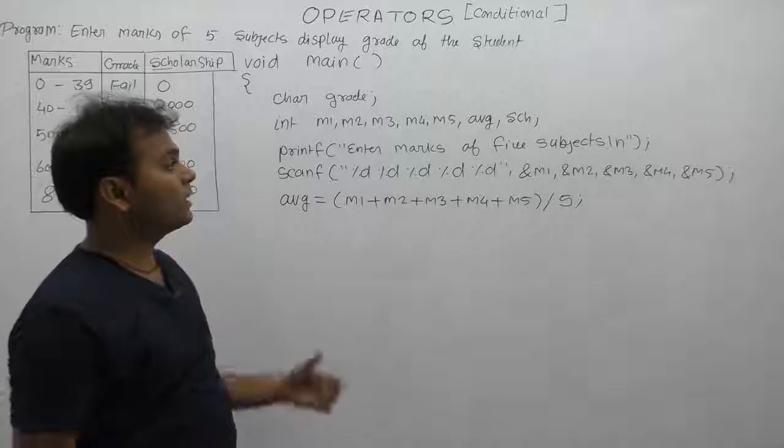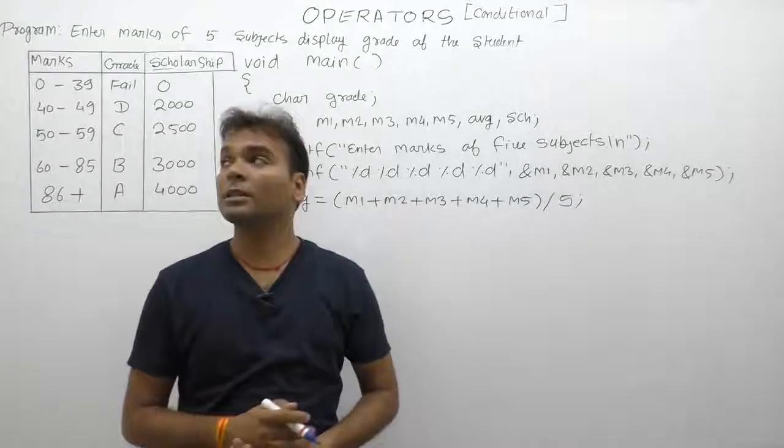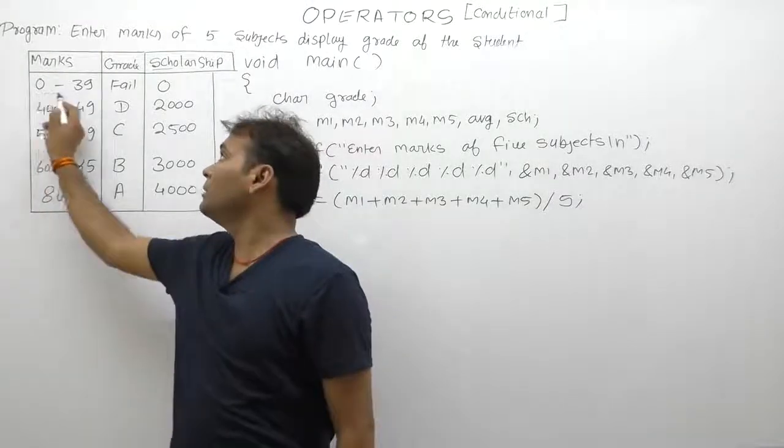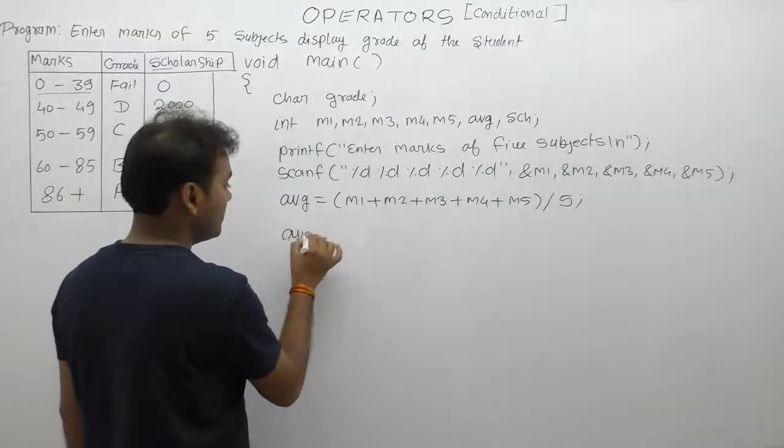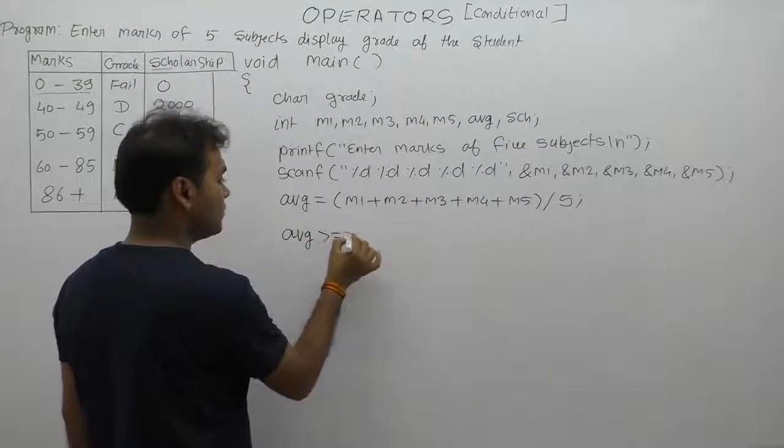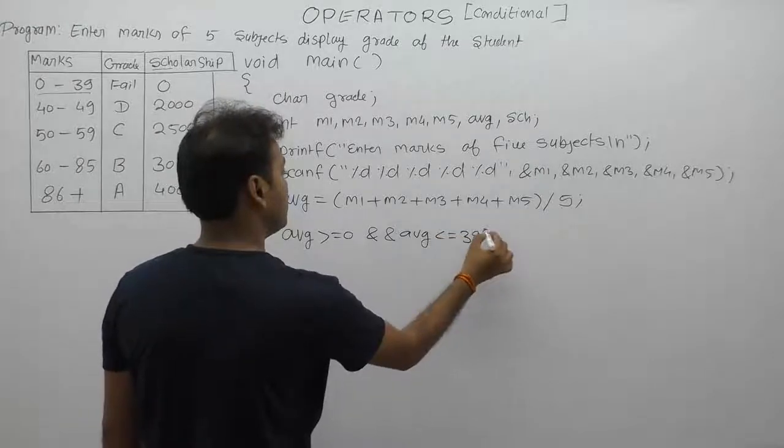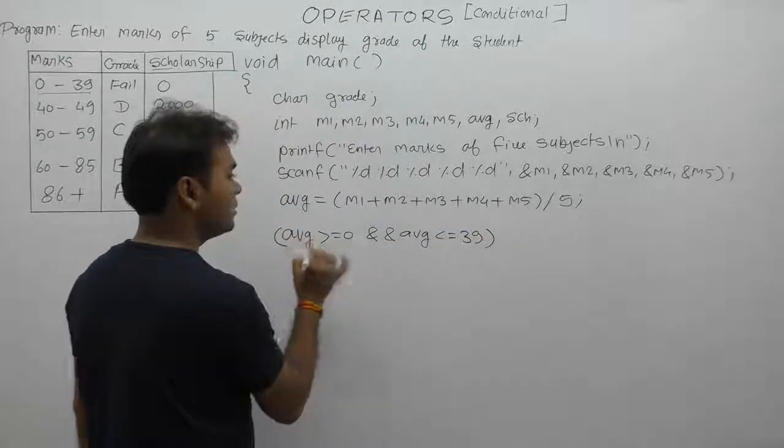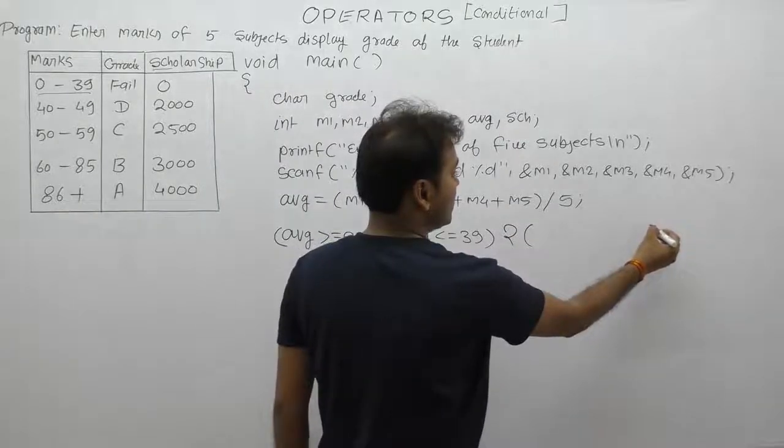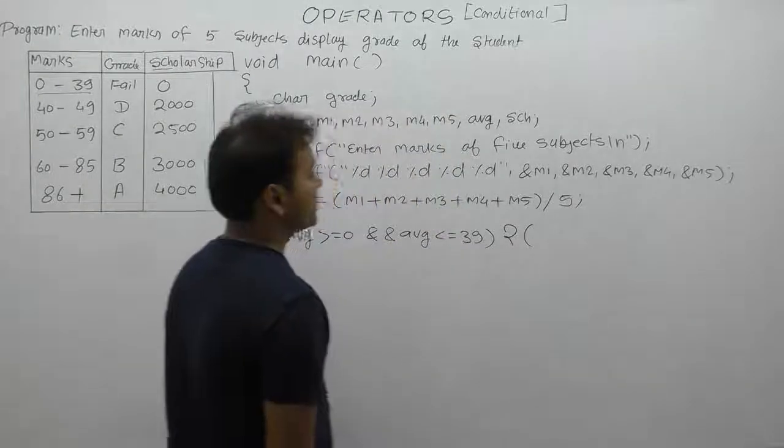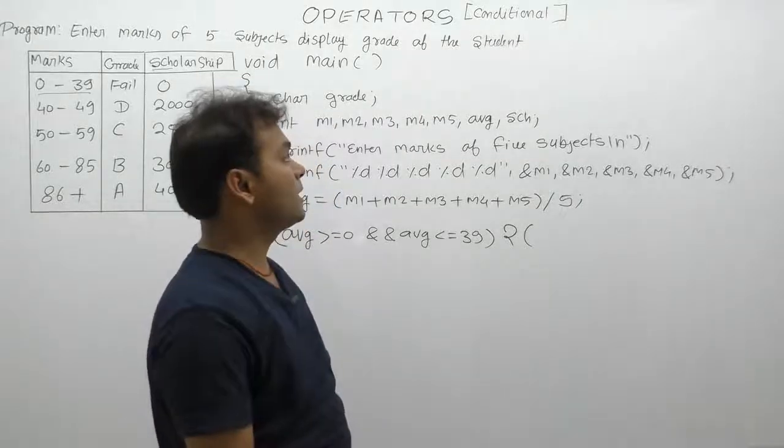After calculating average, now we manipulate the data based on ranges, same as the previous case. First range is between 0 and 39. What is the logic? If average is greater than or equal to 0 AND average is less than or equal to 39, if both conditions are true, then we assign values. In the true section - in the previous case we initialized only single variable, but in this case we initialize two variables.